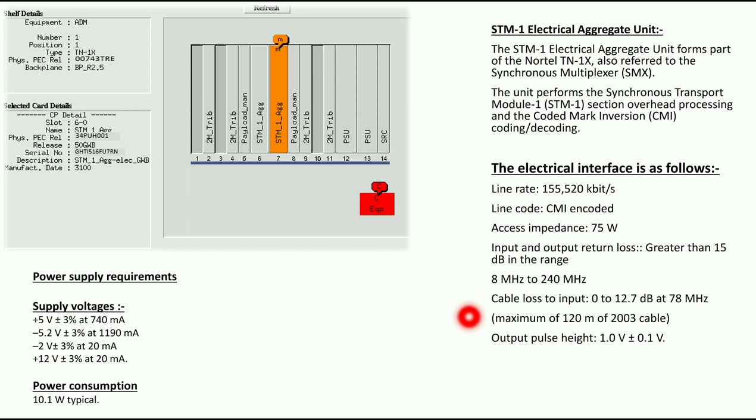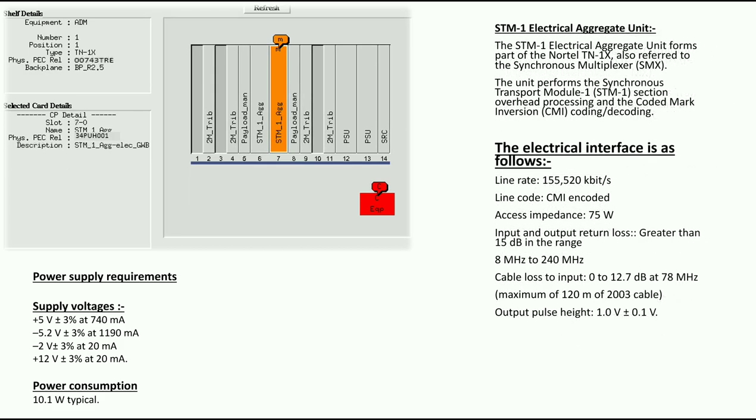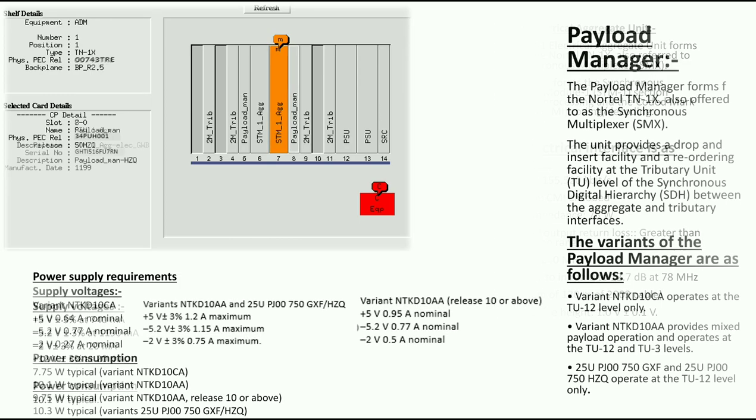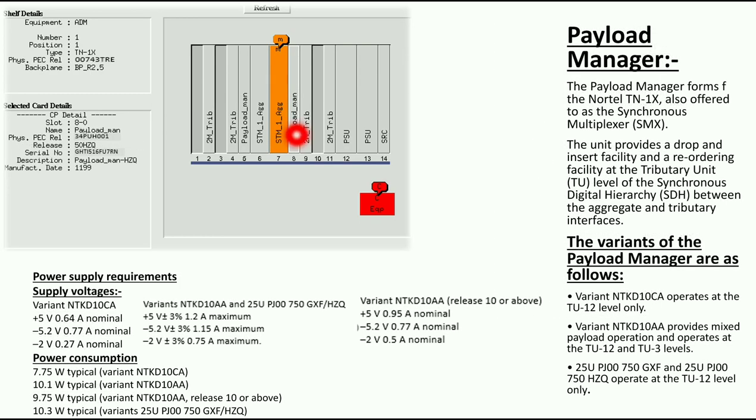These features will be discussed in detail in our card sections. Slot 7 also has the aggregator card, and this is the payload manager, which is similar to the payload manager discussed for Slot 5. Now we are moving to the next slot.